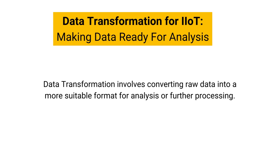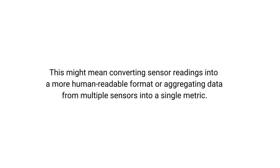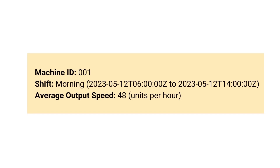Data transformation involves converting raw data into a more suitable format for analysis or further processing. This can involve aggregating data, performing mathematical computations, or converting data types — for example, converting sensor readings into a more human-readable format or aggregating data from multiple sensors into a single metric. It's often necessary to have clean, consistent data before you can effectively transform it. For instance, if you wanted to analyze the average output speed of a machine over an eight-hour shift, you might transform the raw output speed data into an average output speed per shift. This transformed data provides a more useful metric for analysis.